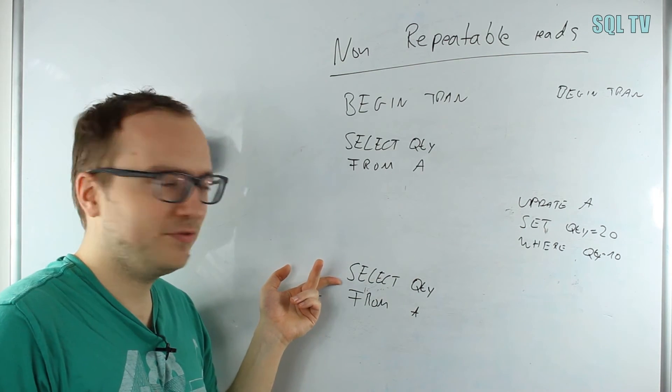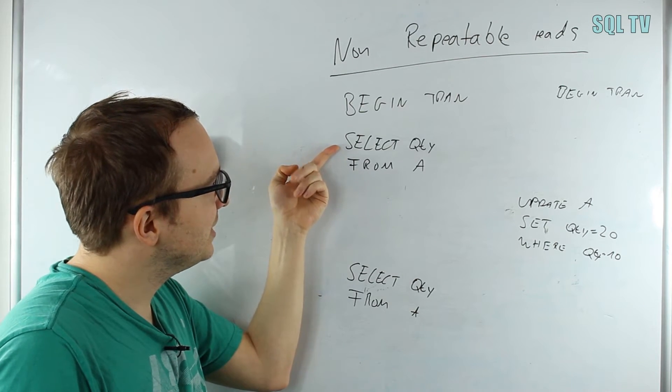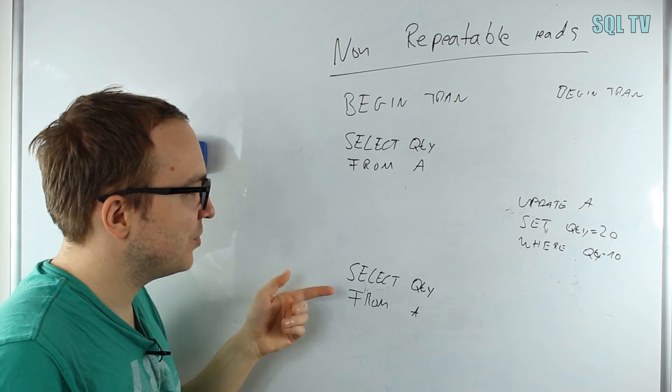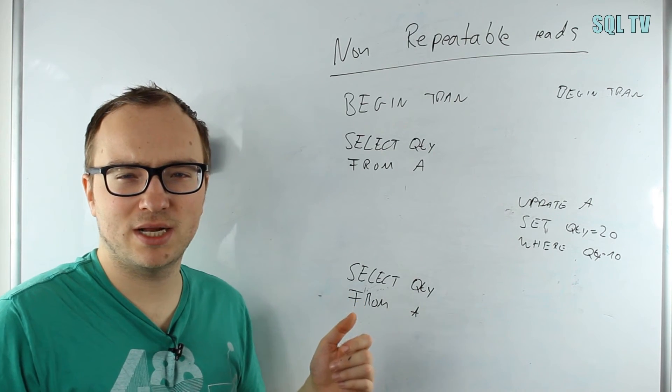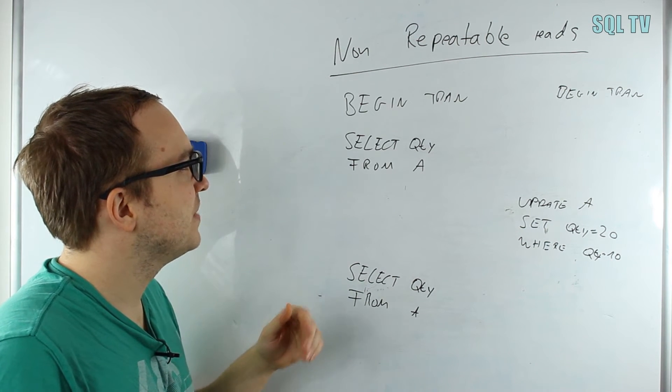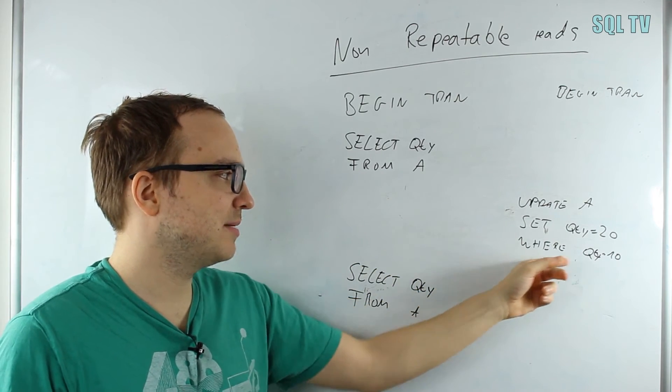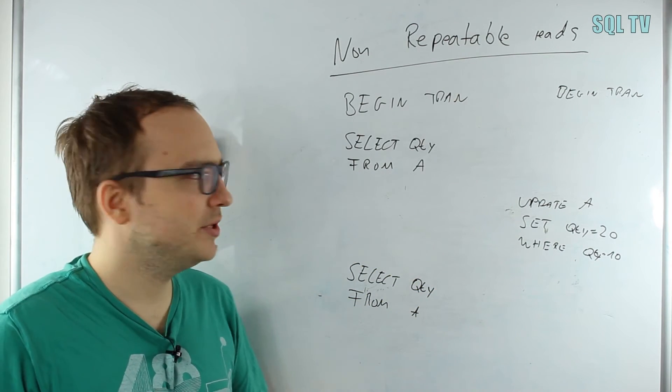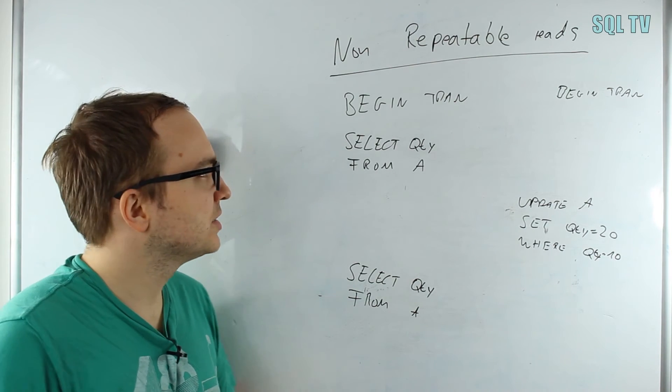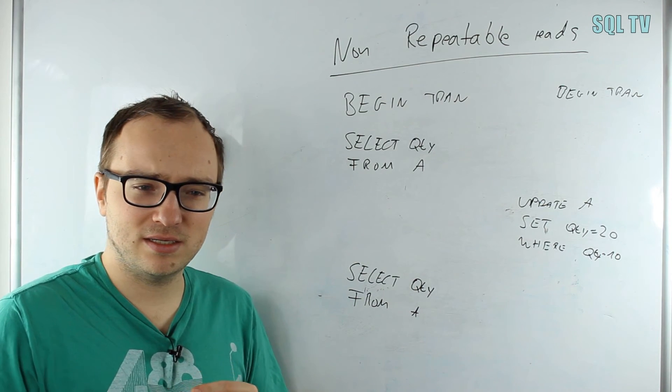Within the same transaction, we receive here a 20 for it. So we read twice or repeated it, but we did not get the same result—we get different results in terms of values. This is the phenomenon called non-repeatable reads because I can't repeat my reads, obviously, because somebody changed it in between another transaction before everything was committed here.